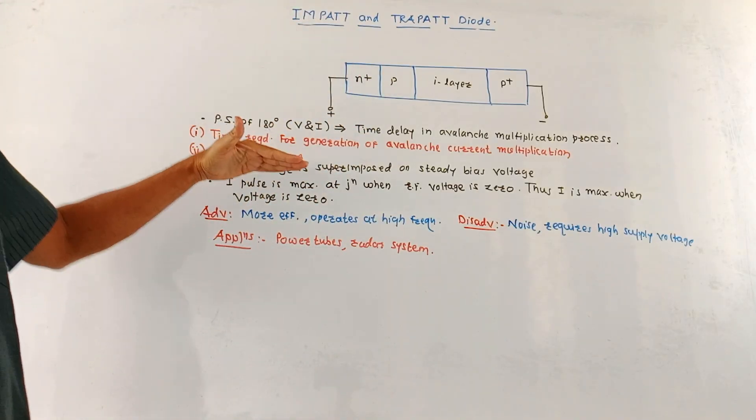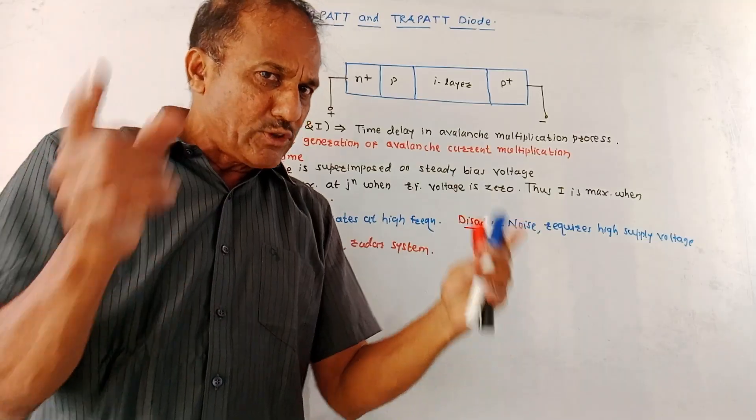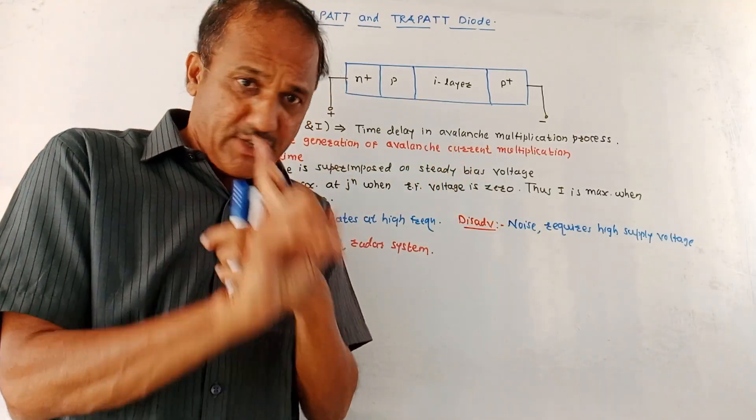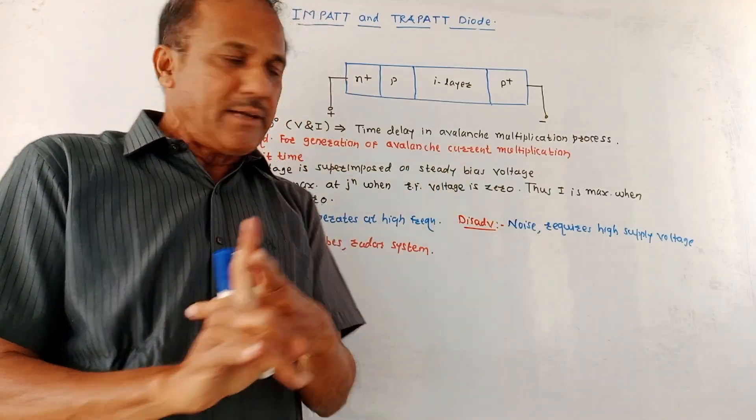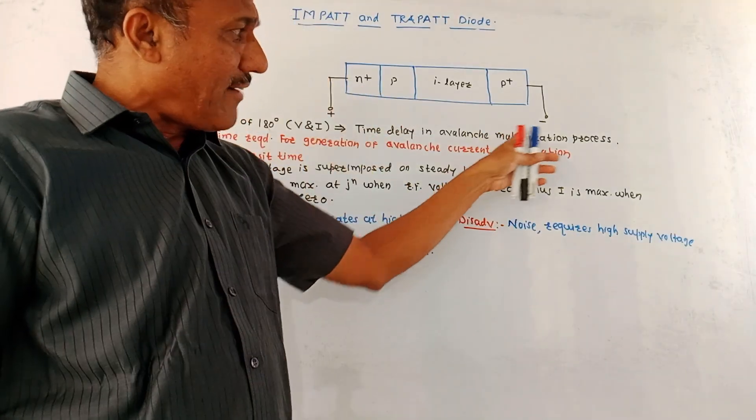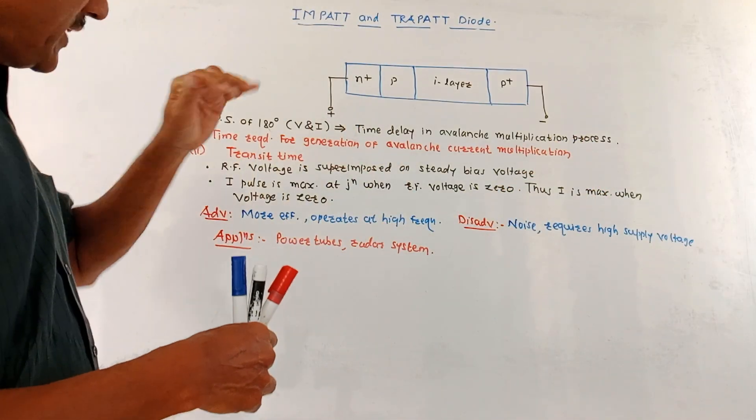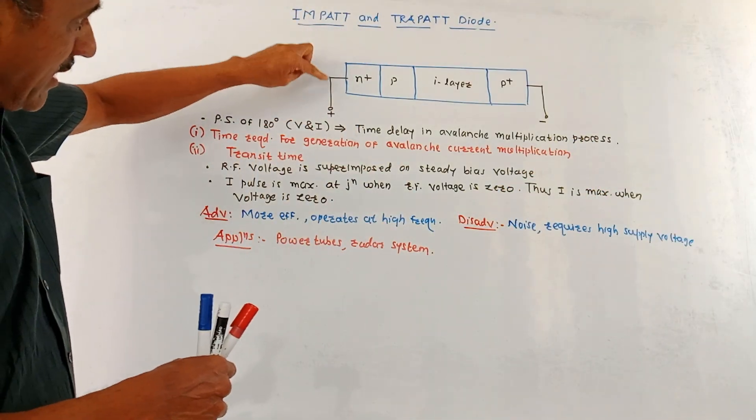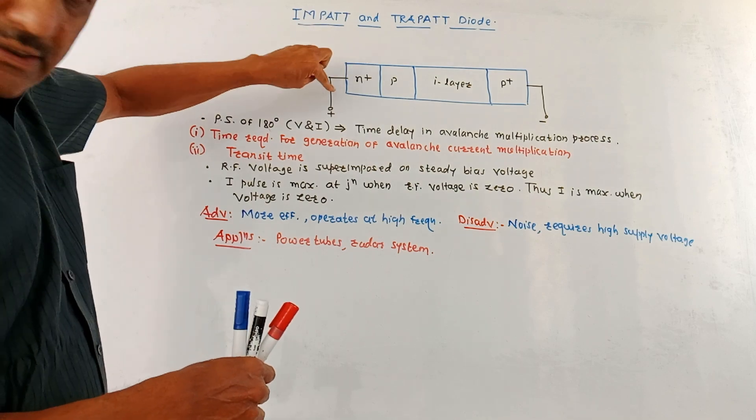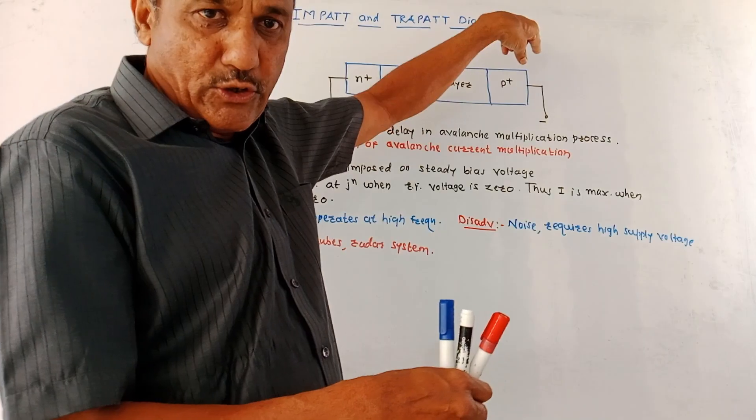As we discussed, the major characteristic of this diode is there is a delay problem. So it produces a phase shift of 180 degree between voltage and current. This is mainly due to the avalanche or delay produced in the avalanche multiplication process. During the positive cycle, plus supply is connected to N plus region and minus is connected to P plus region.